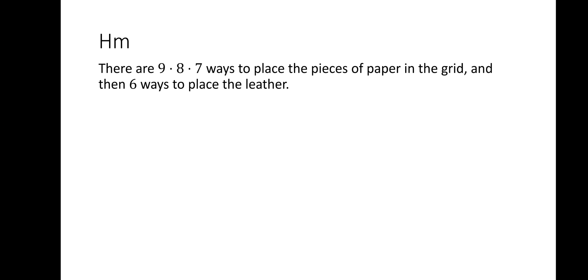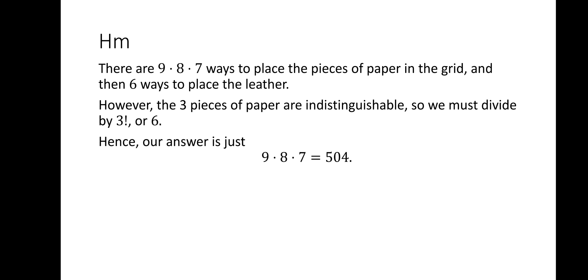Well, there are 9 times 8 times 7 ways to place the pieces of paper in the grid, and then there are 6 remaining squares to place the leather. But there are 3 factorial ways to switch around the pieces of paper because they're indistinguishable. So the 6s cancel out in the numerator and denominator, so our answer is just 9 times 8 times 7 or 504.